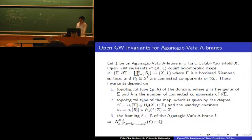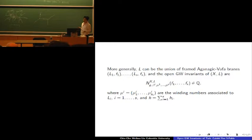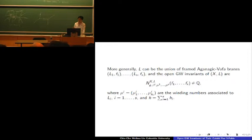More generally, we can let (X, L) be the disjoint union of several framed Aganagic-Vafa branes. Now we still have a genus and a number of holes, but we have one collection of winding numbers for each Aganagic-Vafa brane. Now I'm going to tell you two ways to define these invariants mathematically.